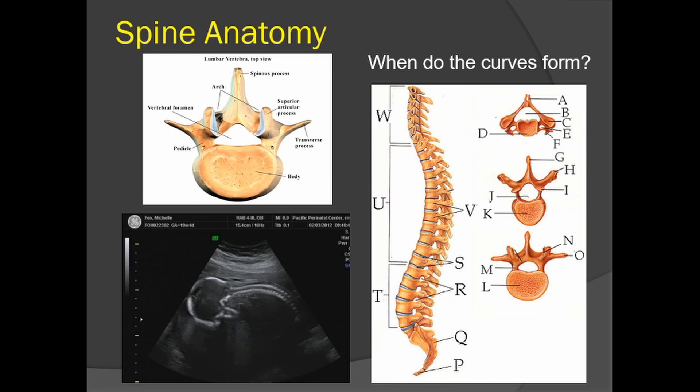The thoracic curve doesn't change much under normal circumstances and pretty much stays the same throughout life. The lumbar curvature forms when we begin walking at about one year of age — though this varies greatly from person to person — as we try to stand upright, walk, and move around furniture.